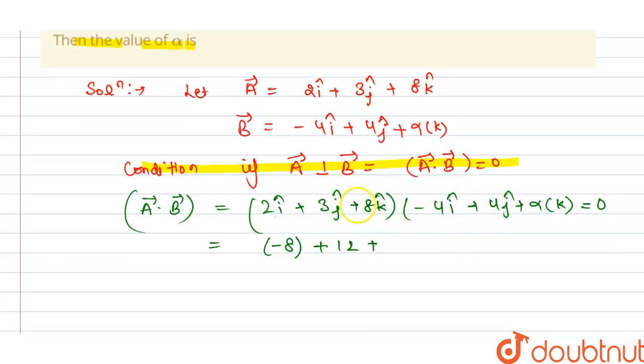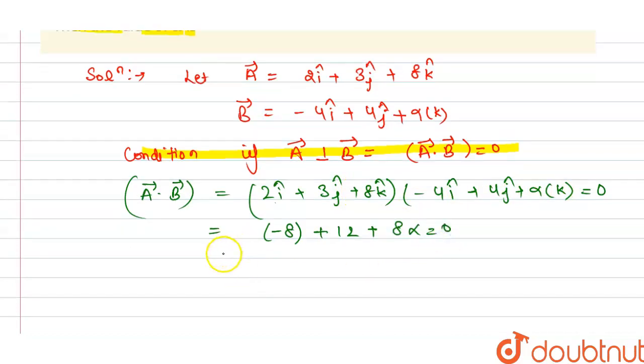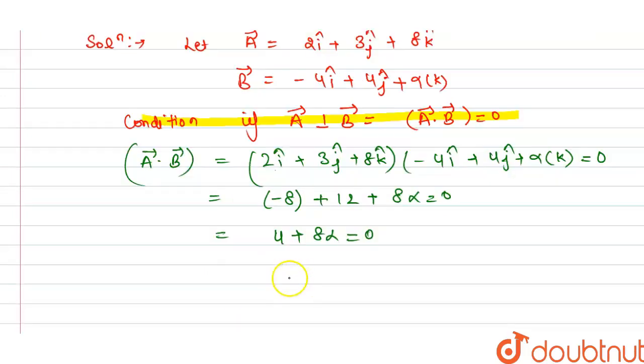So from this we can write minus 8 plus 12 plus 8 alpha is equals to 0. So we get 4 plus 8 alpha is equals to 0, so 8 alpha is equals to minus 4. We get alpha is equals to minus 4 divided by 8, so this is minus 1 by 2. So this is the value for alpha. This is our answer, thank you.